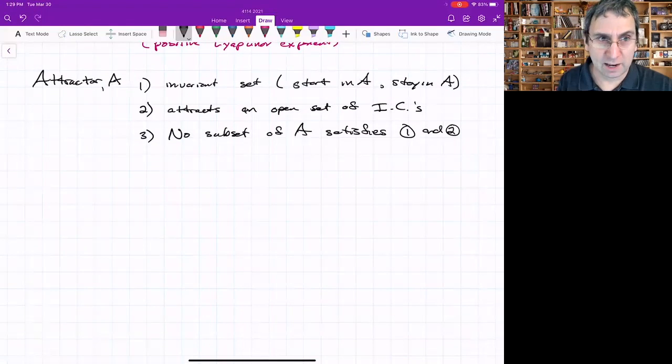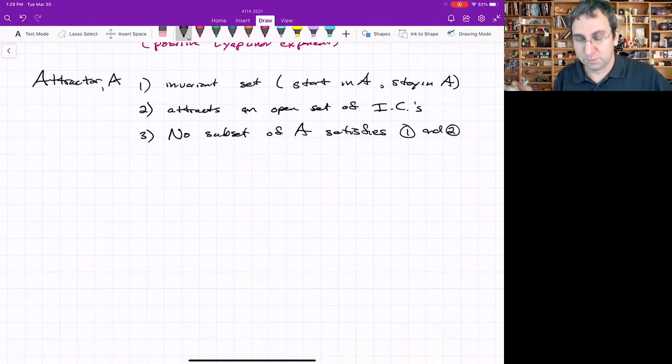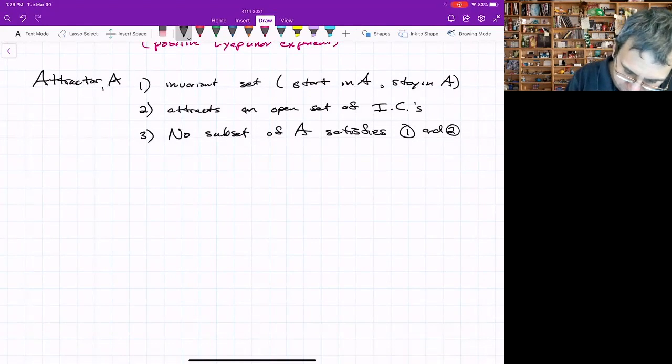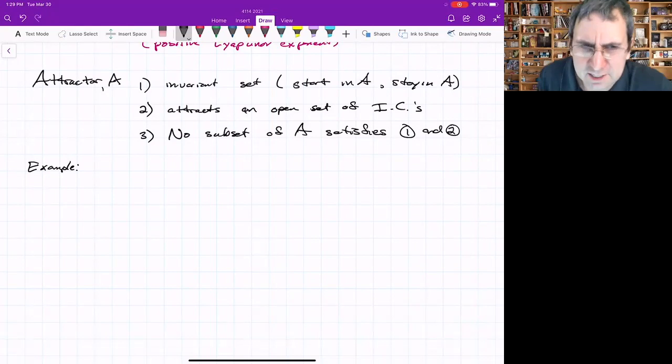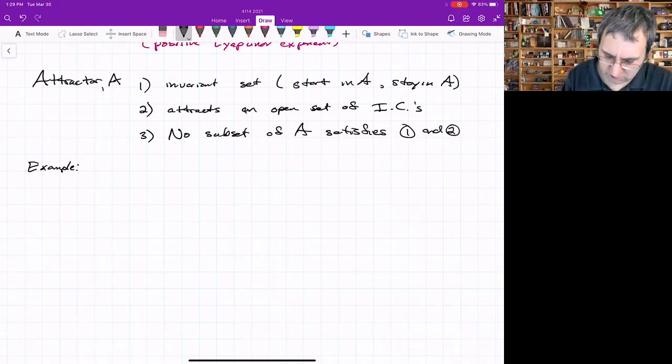Let me give you an example to show you the need for this last thing, number three. We haven't said anything about chaos. To have an attractor that's also chaotic would be something new. Here's an example that illustrates this idea of the attractor. We've seen this system before.